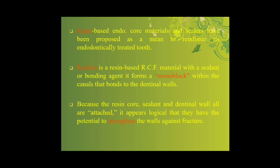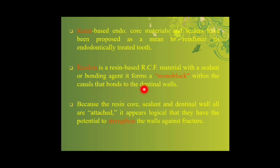The resin-based core material and resin-based sealer are thought to form a monoblock. The monoblock theory means that the resin cones are sealed to the bonding agent and sealer — which contains a bonding agent — and all of that is bonded to the dentine wall, creating a monoblock. This sealing and monoblock concept is thought to strengthen the endodontically treated tooth, protecting it against fracture.